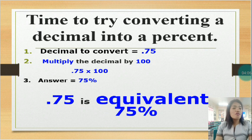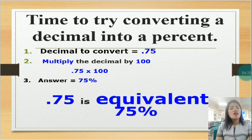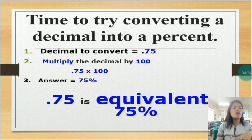Time to try converting a decimal into a percent. The decimal to convert is 0.75. You have multiplied the decimal by 100, that is 0.75 times 100. The answer would be 75%. So 0.75 is equivalent to 75%.